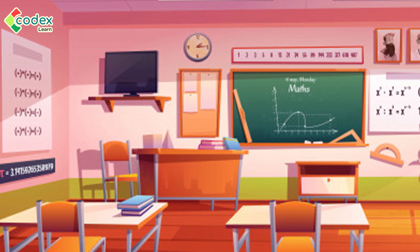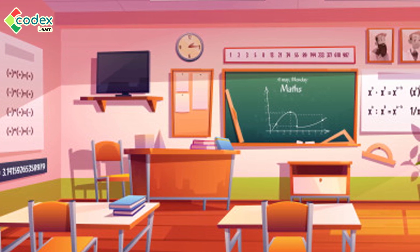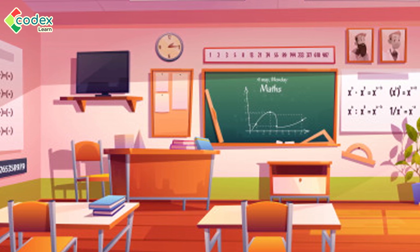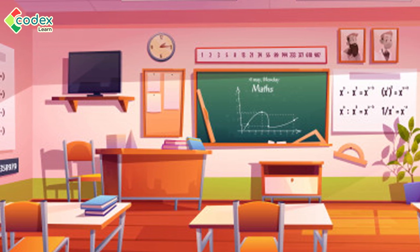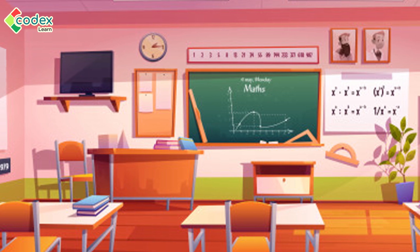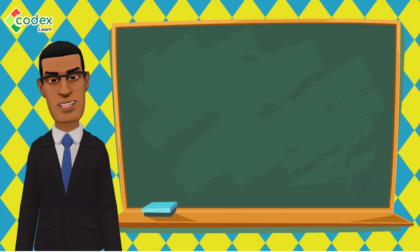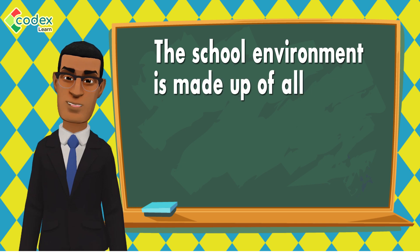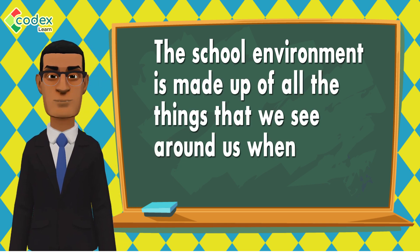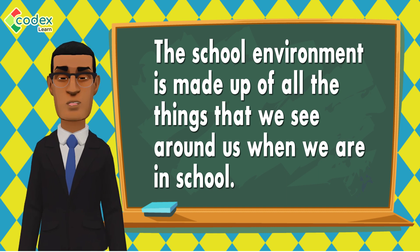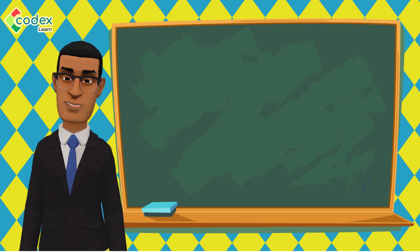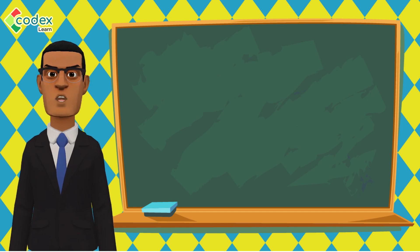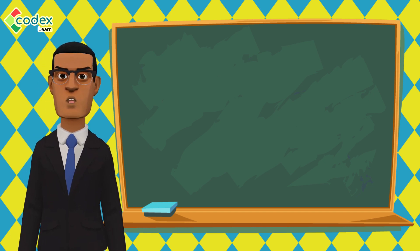When we are in school, the environment changes. There are no longer the same kind of things that we saw at home. We do not see sitting room chairs in the classroom, and we do not see dining tables in the classroom. This is because it is the school environment. We need to explore our environment so that we can know the things around us and how to take care of them.